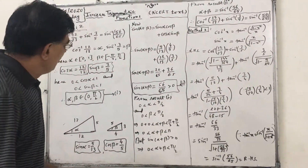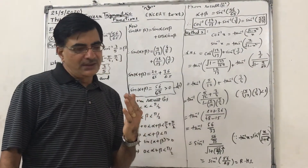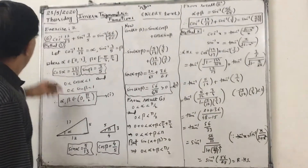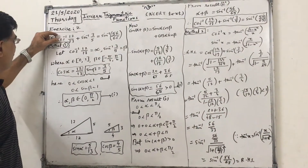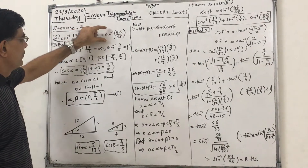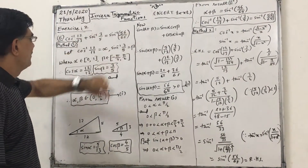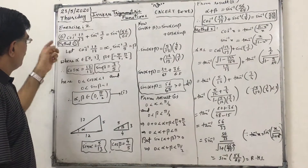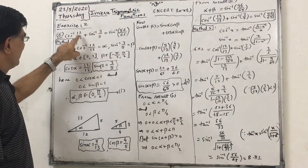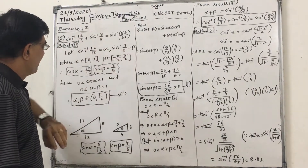Again we will prove by 2 methods, to have your concepts clear. So this is the data: cos inverse of 12 by 13 plus sin inverse of 3 by 5 equals to — we have to prove sin inverse of 56 by 65. Let us assume that cos inverse of 12 by 13 equals to alpha, and sin inverse of 3 by 5 equals to beta.